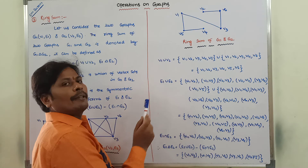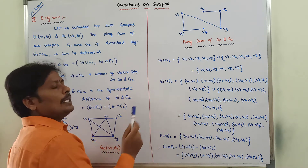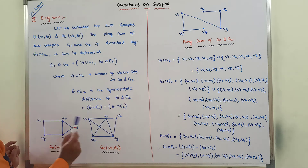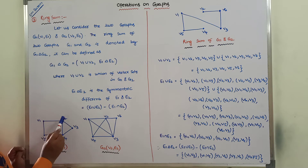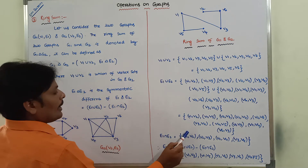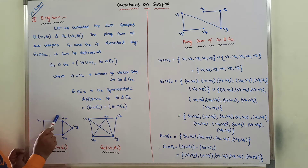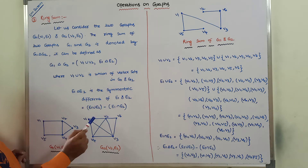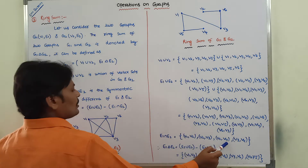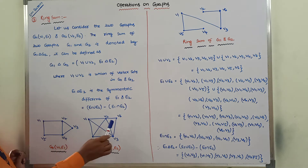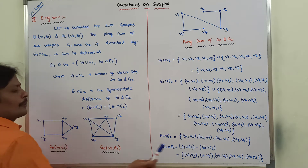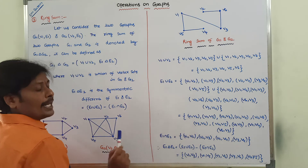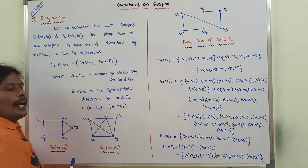Next, E1 intersection E2 gives the common edges between G1 and G2. The common edges are: {V1,V2}, {V2,V3}, and {V2,V4}. These are the edges that appear in both edge sets E1 and E2.